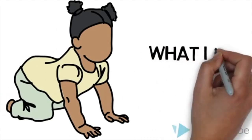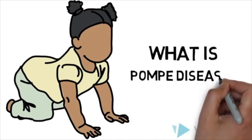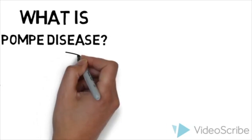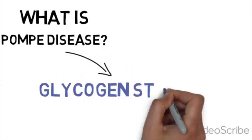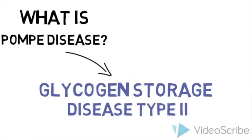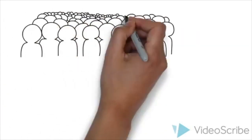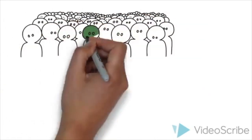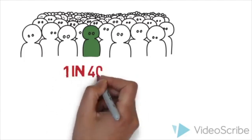What is Pompe disease? It is also known as glycogen storage disease type 2. It is an autosomal recessive condition that is estimated to affect one in every 40,000 births.